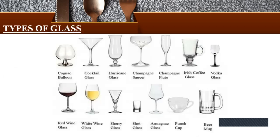Additional glass types include: cognac balloon, also called a brandy balloon; cocktail glass; hurricane glass; sherry glass; red wine glass and white wine glass — with a difference between the two; short glasses; panchka; beer mug for beer service; Irish coffee glass; and borka glass.